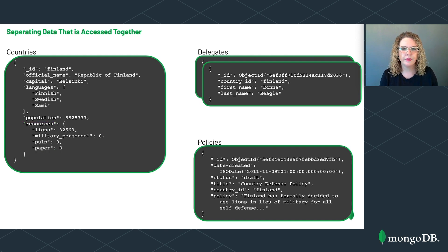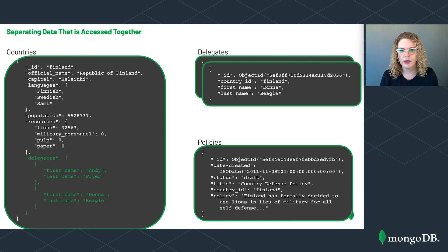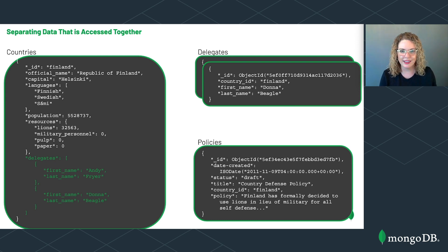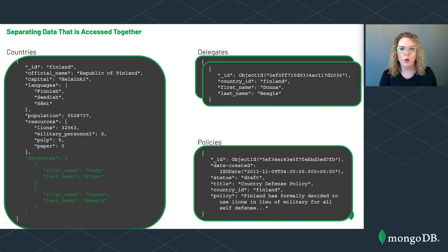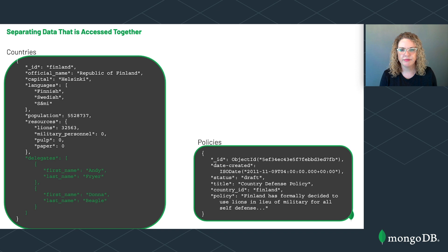Let's keep analyzing the schema. We have a one-to-many relationship between countries and delegates. We can create an array named delegates in the country documents, where each delegates array stores objects with delegate information. We can feel good about storing delegate information in the country documents since each country will have only a handful of delegates, meaning the delegates array won't grow infinitely. Also, Leslie won't be frequently accessing delegate information separately from their associated countries, so this schema makes sense. We no longer need the delegates collection, so we can delete it.